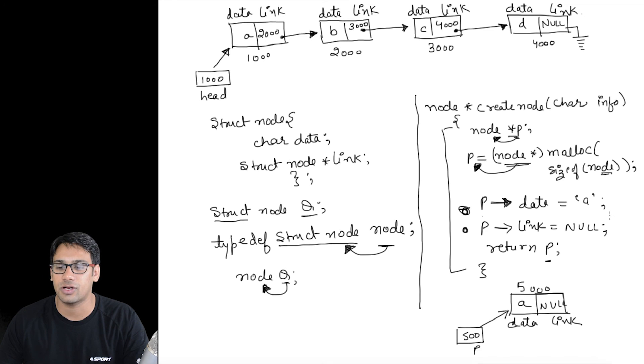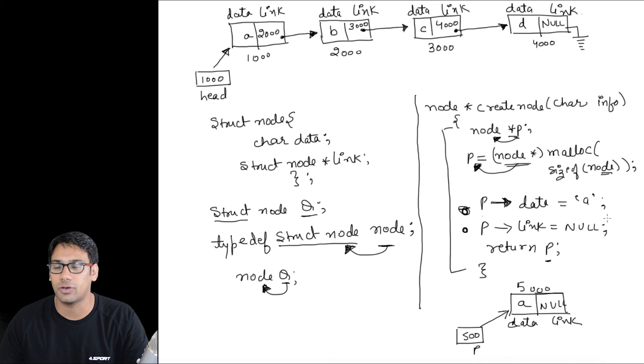This is the basic function used to create a node in a linked list. Whenever we need to create a node, we just call this function. Now let's look at what the different operations on a linked list are.